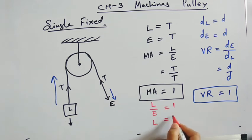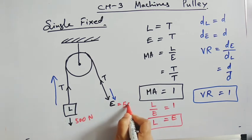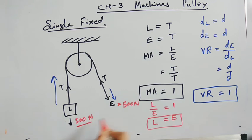The value of load is same as effort. Suppose the load value is 500 N. So the effort applied will also be equal to 500 N. So to pull a load of 500 N, you have to apply a force of 500 N only, effort of 500 N.